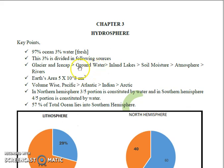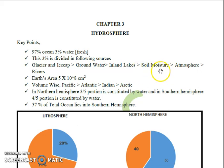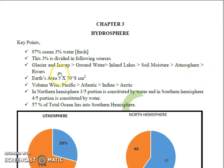After glaciers and ice caps, the order is: groundwater, followed by inland lakes, followed by soil moisture at 0.005%, followed by atmosphere at 0.001%, and rivers at 0.0001%.